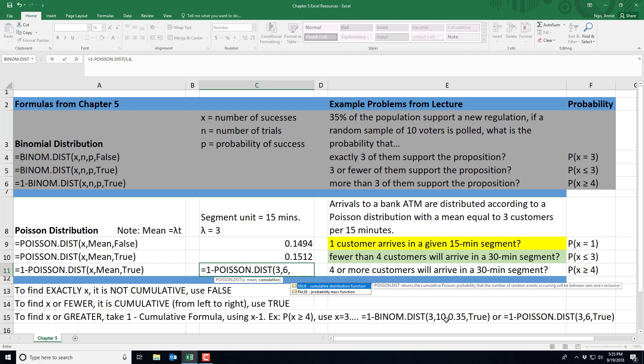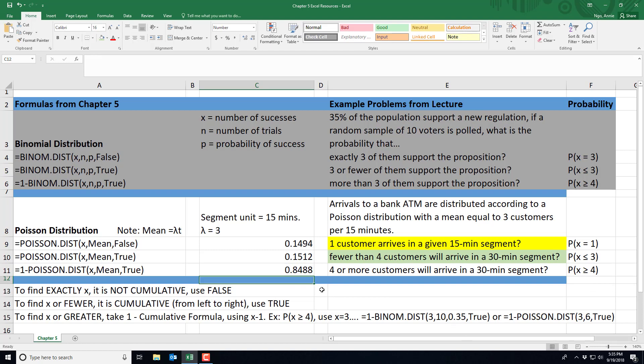Put my comma. We'll use true because it is cumulative. And then go ahead and hit enter. And so the probability that I have 4 or more customers arriving in a 30 minute segment is 0.8488. So if you have any questions, just let me know.